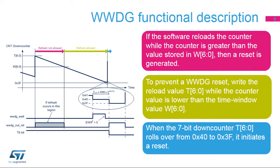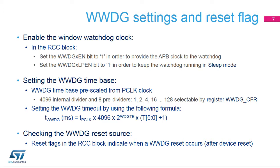This happens when the application refreshes the watchdog too early. No interrupt is generated in this case. To prevent a window watchdog reset, the watchdog refresh must happen while the down-counter value is lower than the window value and greater than 0x3F — illustrated by the green area. The refresh operation consists of reloading the down-counter with bits T[6:0]. To enable the window watchdog clock, the corresponding window watchdog enable bit in the RCC block must be set to 1.